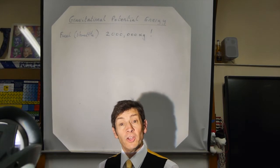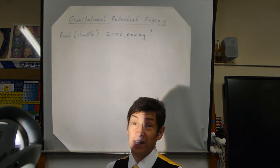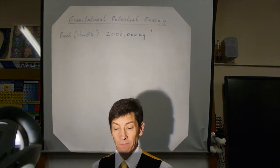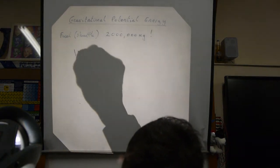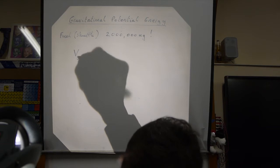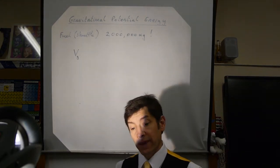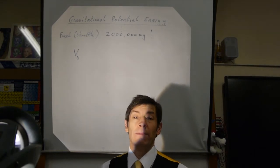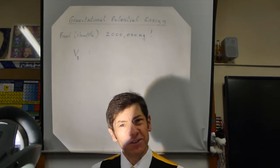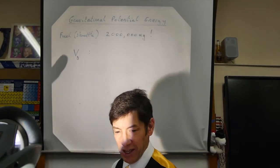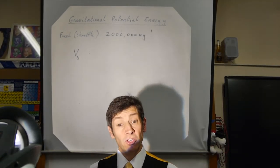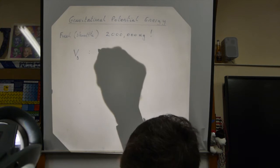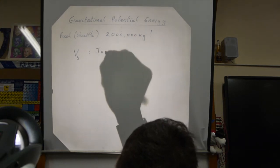Now let's look at gravitational potential energy in a bit more mathematical detail. You'll remember that the gravitational potential at a point, V_g, is the amount of energy per kilogram at that point — so it's in joules per kilogram.